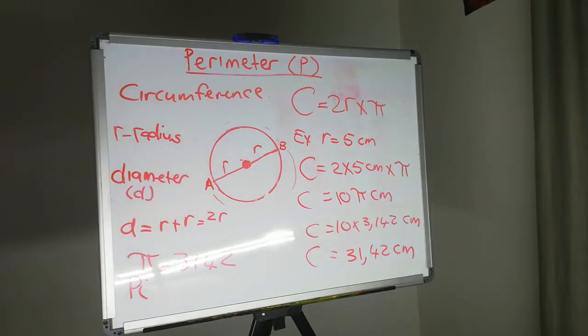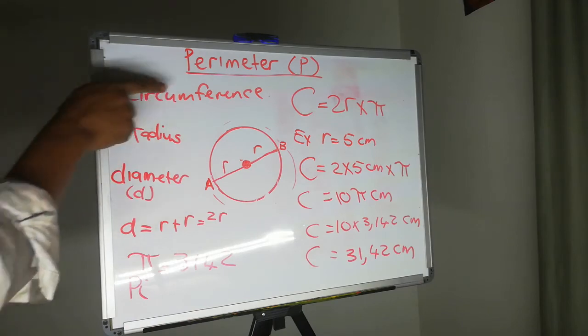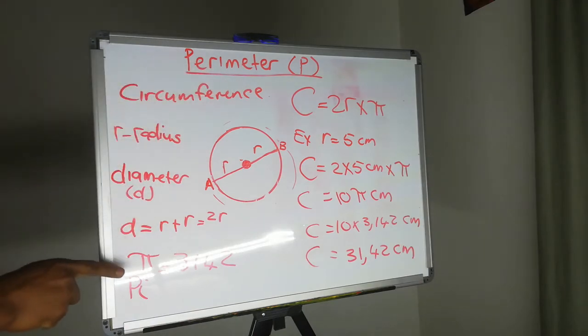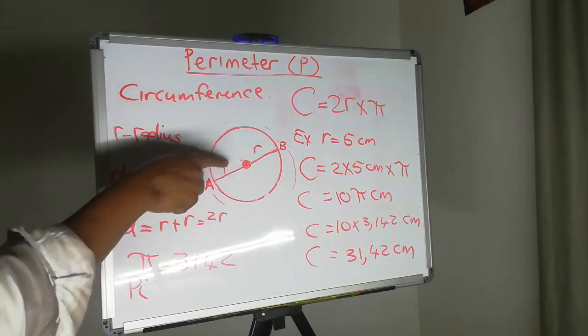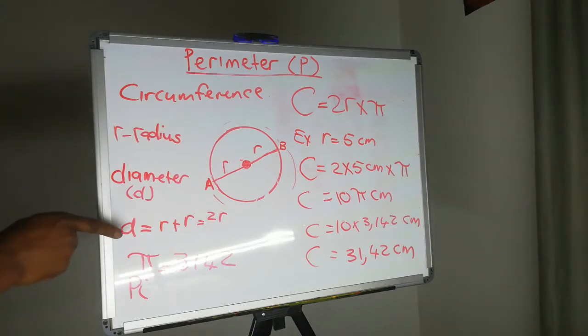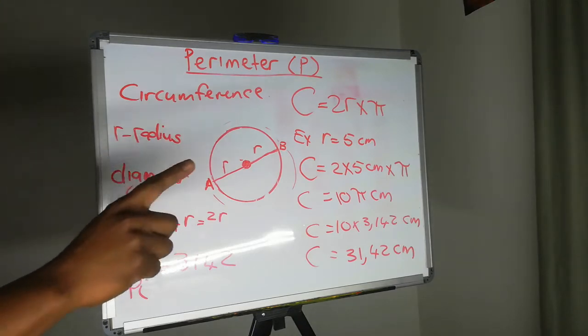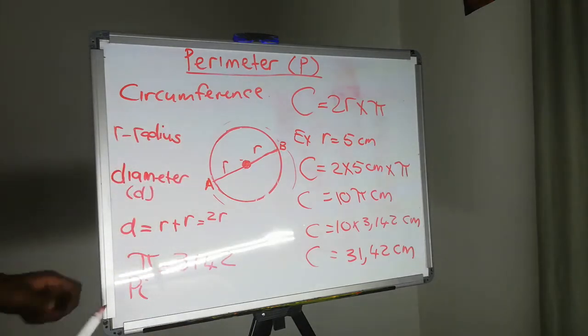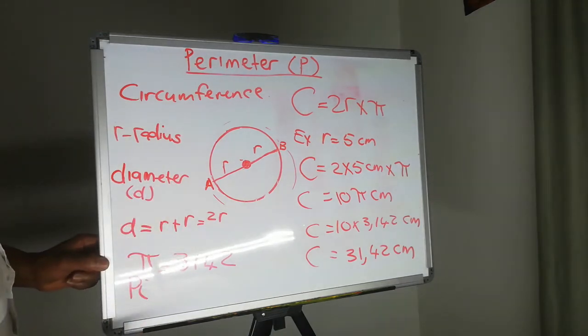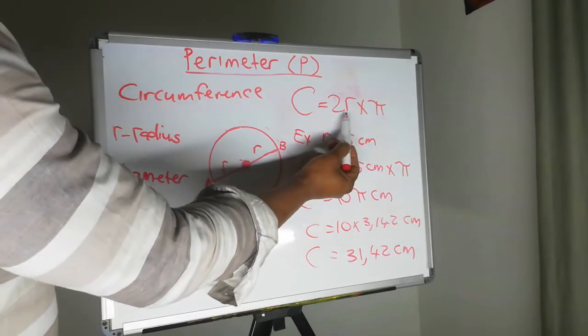So just to recap quickly, circumference is calculated by two radii, which is the diameter. So the diameter times the pi, and that will give us the circumference. You can write this differently.